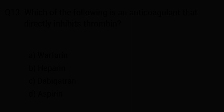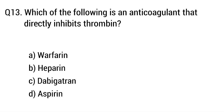Question number thirteen. Which of the following is an anticoagulant that directly inhibits thrombin? The right answer is option C: Dabigatran.